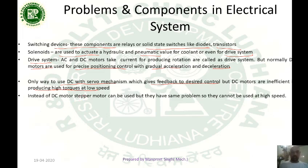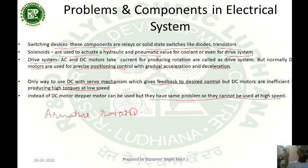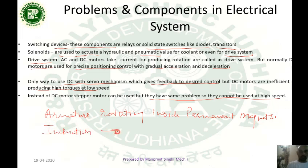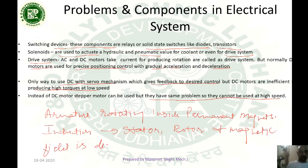Instead of DC motors, stepper motors can be used, but they have the same problem — they cannot be used at high speeds. DC motors have an armature rotating inside a permanent magnet. Induction motors have two parts: stator and rotor, and the magnetic field is developed when current flows through them.